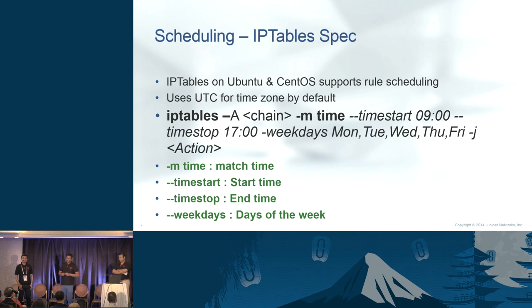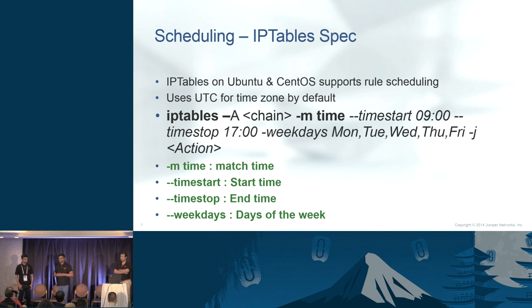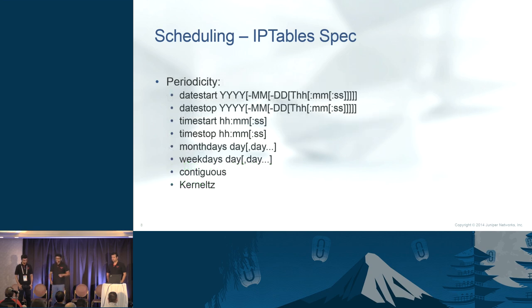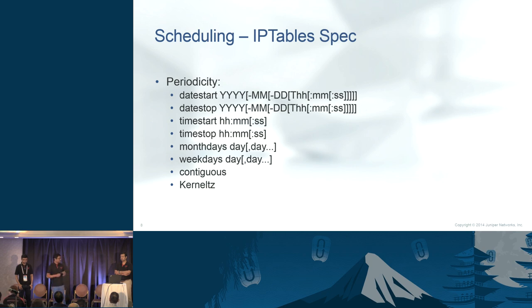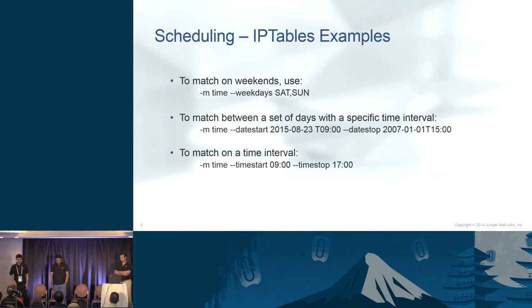To take an example: if you want to schedule a rule from 9 to 5 on all weekdays, the command is iptables with a chain, match condition 'time', time-start set to 9 o'clock, time-stop set to 5 o'clock, weekdays Monday to Friday, and then the action. The available schedule parameters are: date-start, date-stop, time-start, time-stop, and day of week using weekdays. For example, weekdays Saturday and Sunday for a weekend-only rule, or date-start and date-stop for a date range.